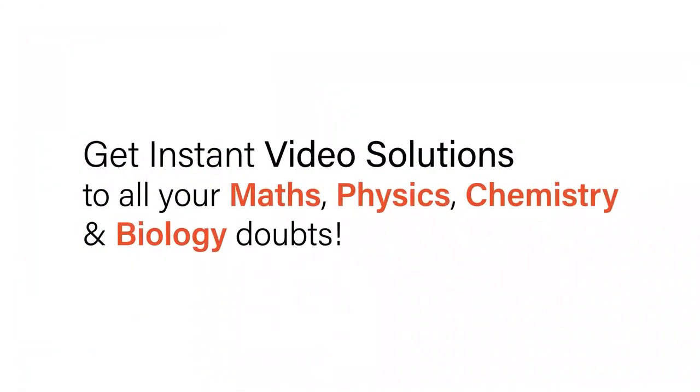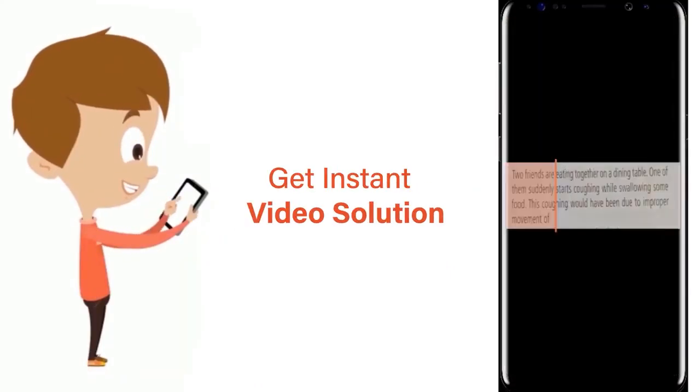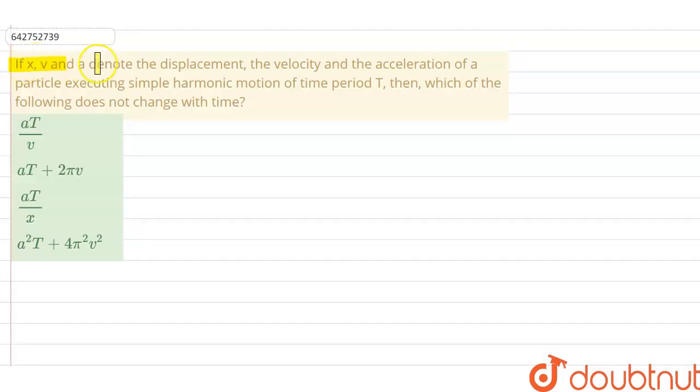With Doubtnet, get instant video solutions to all your maths, physics, chemistry and biology doubts. Just click the image of the question, crop the question, and get instant video solution. Download Doubtnet app today. The question is: if x, v and a denotes displacement, velocity and acceleration...